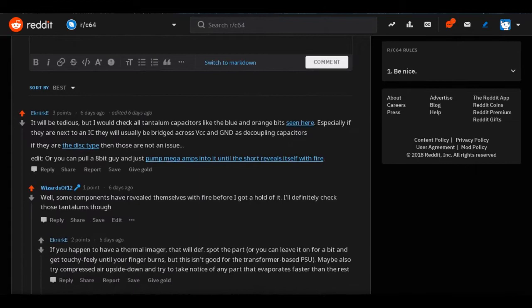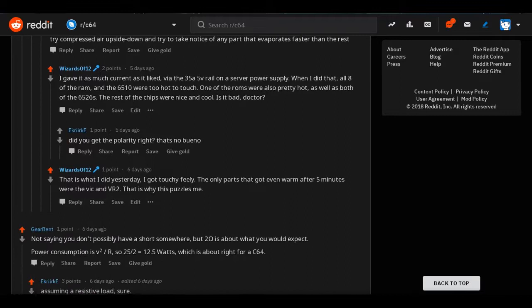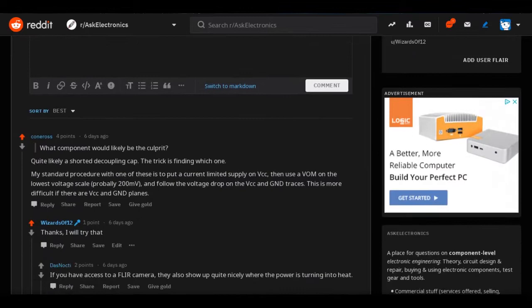And I don't own a FLIR camera, so that wasn't an option. So I pulled an 8-bit guy and I hooked up a 35-amp 5-volt rail from a service supply to the Commodore's 5-volt rail. In this way, the chips and components that were shorted internally would heat up and reveal themselves, as they could get all the current they like.